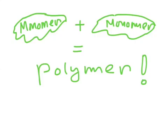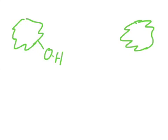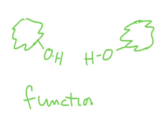In this case it's actually a dimer. Dimer means two. In order for dehydration to work, each monomer needs a functional group, which is an oxygen atom attached to a hydrogen atom. Notice that with the functional groups, the oxygen is attached to the molecule and the hydrogen is attached to the oxygen atom.